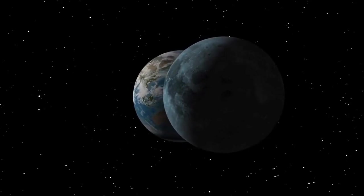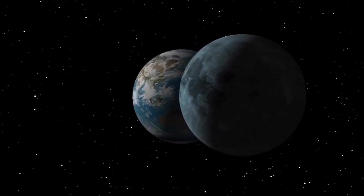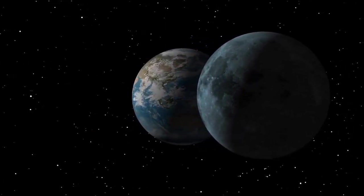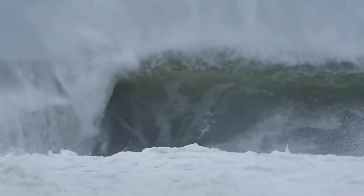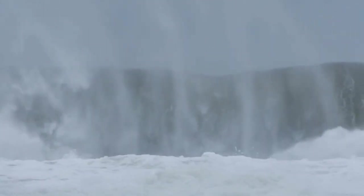The moon makes Earth a more livable planet by moderating our home planet's wobble on its axis, leading to a relatively stable climate. It also causes tides, creating a rhythm that has guided humans for thousands of years.